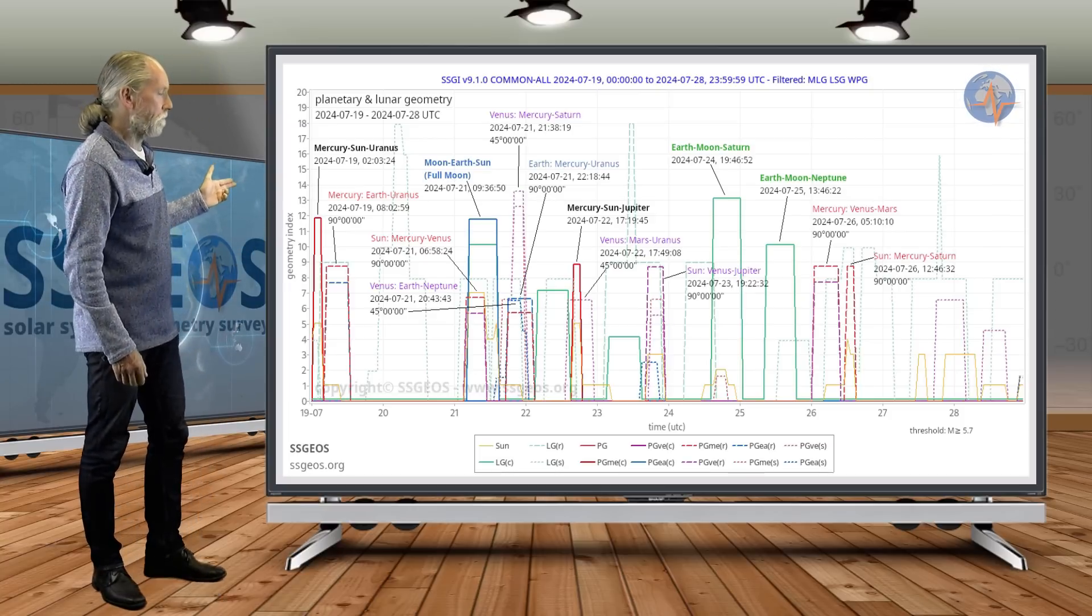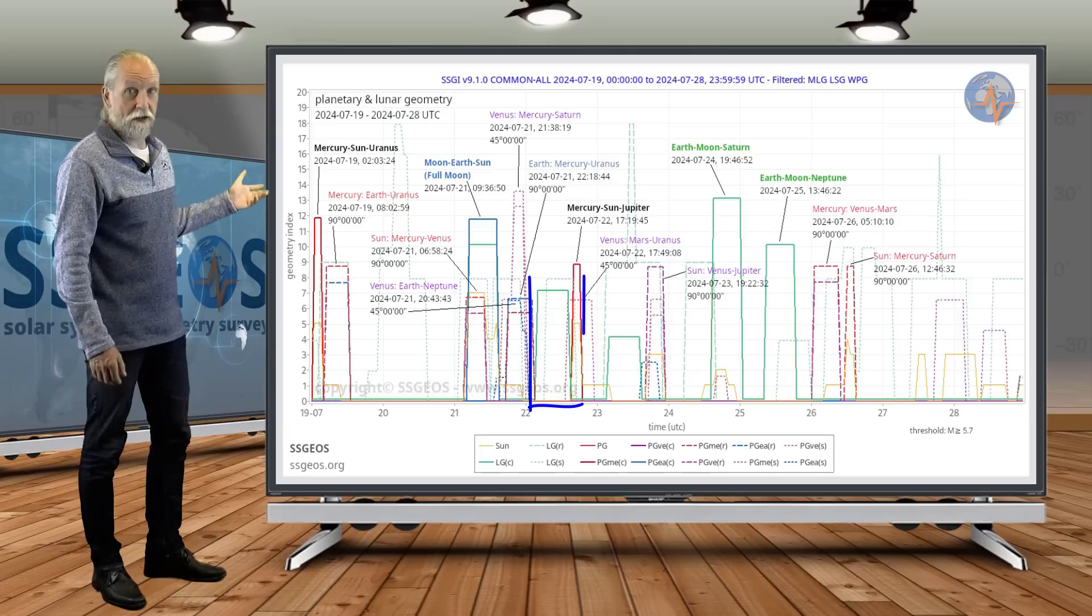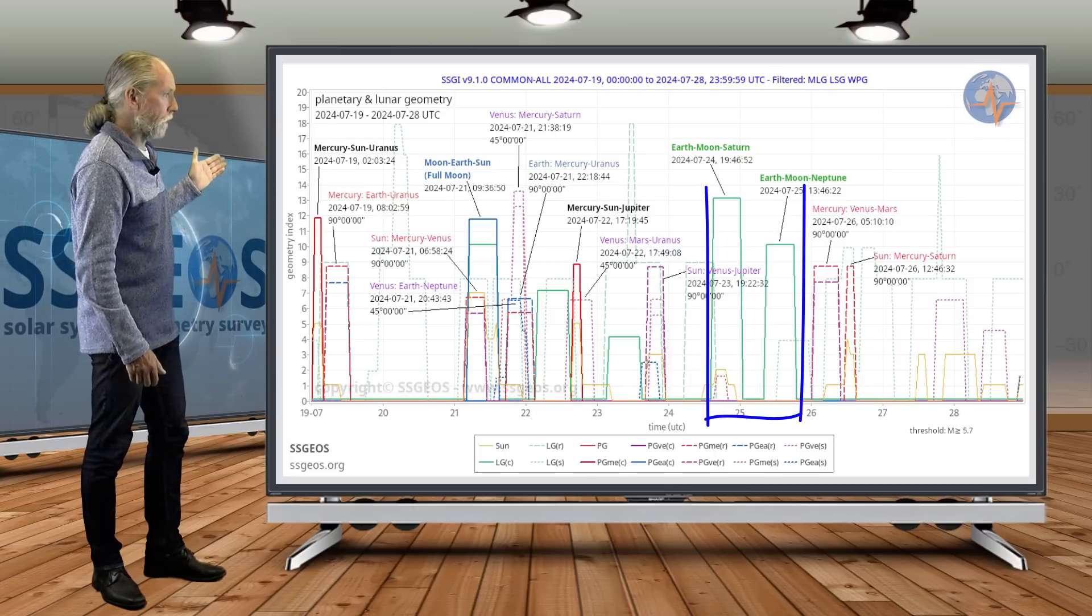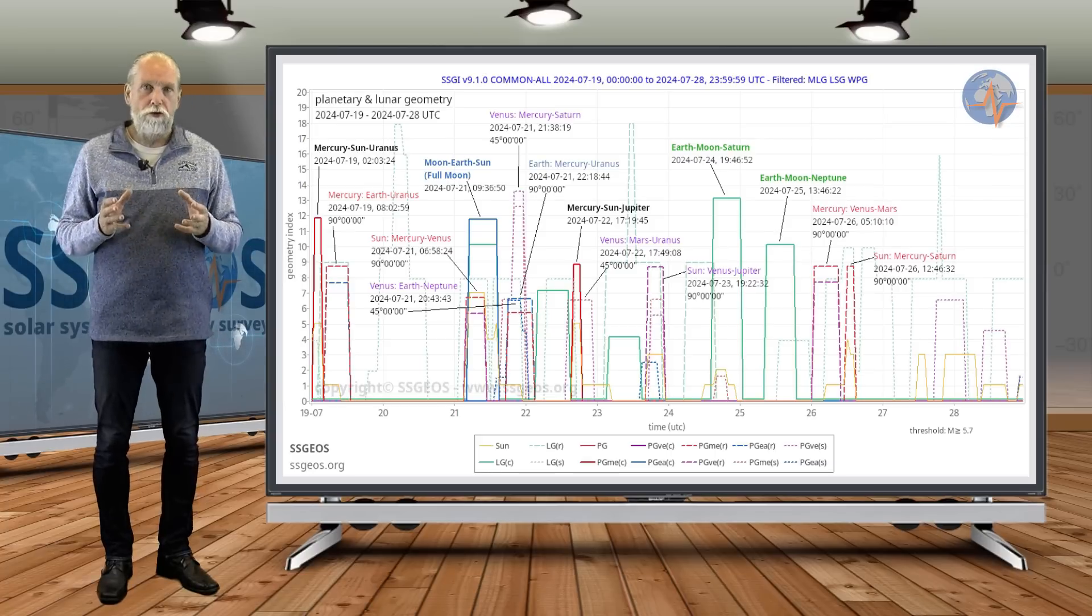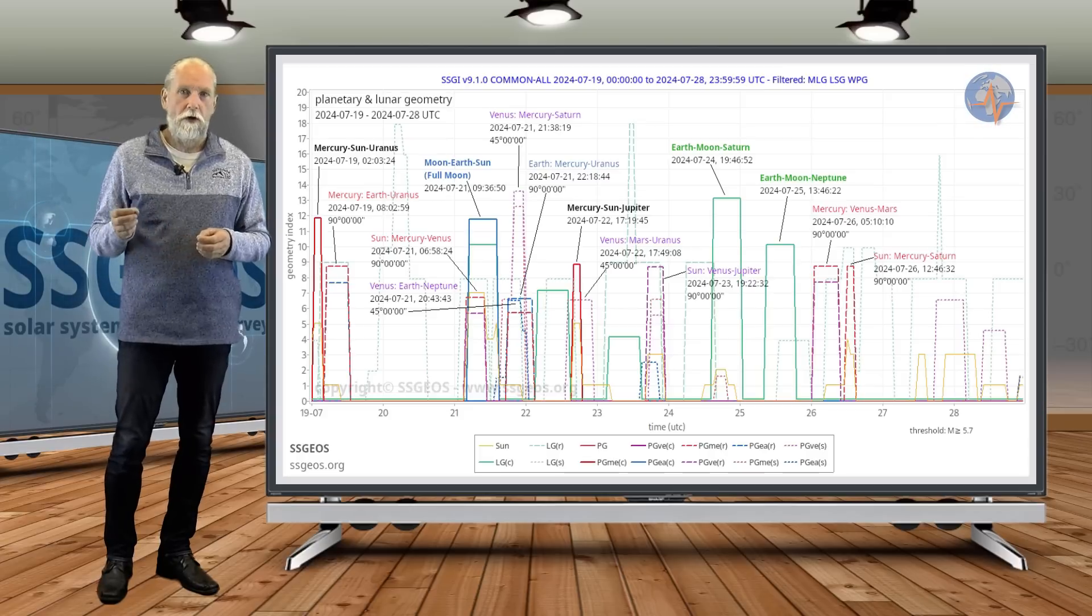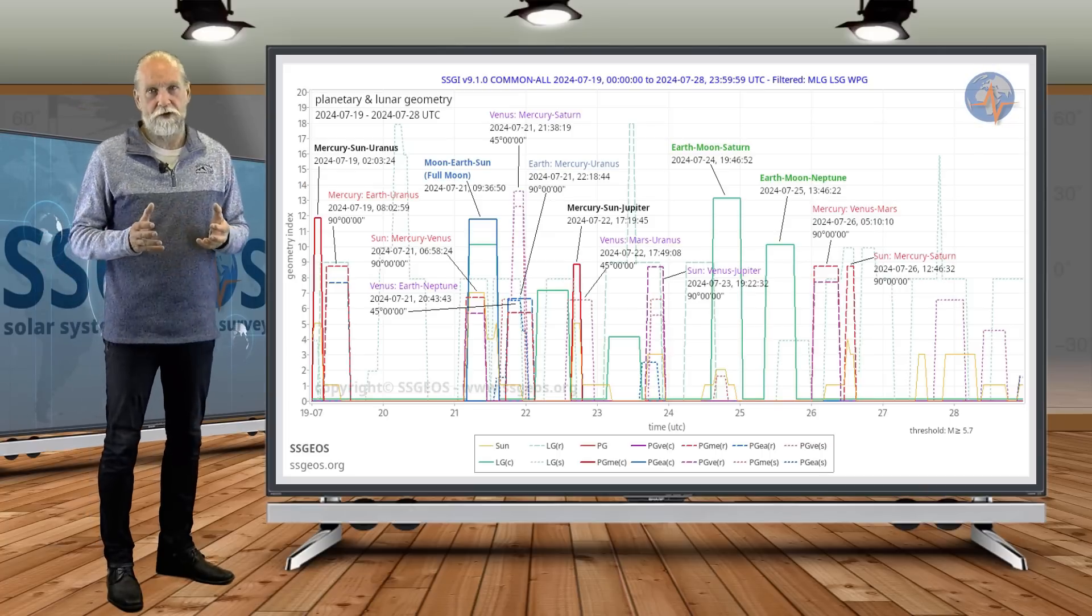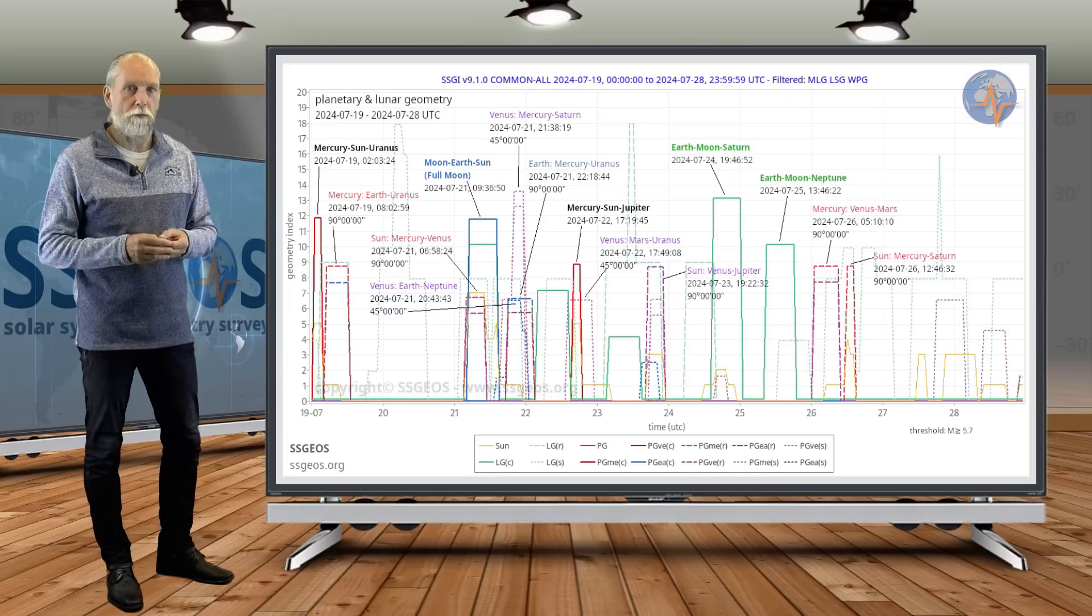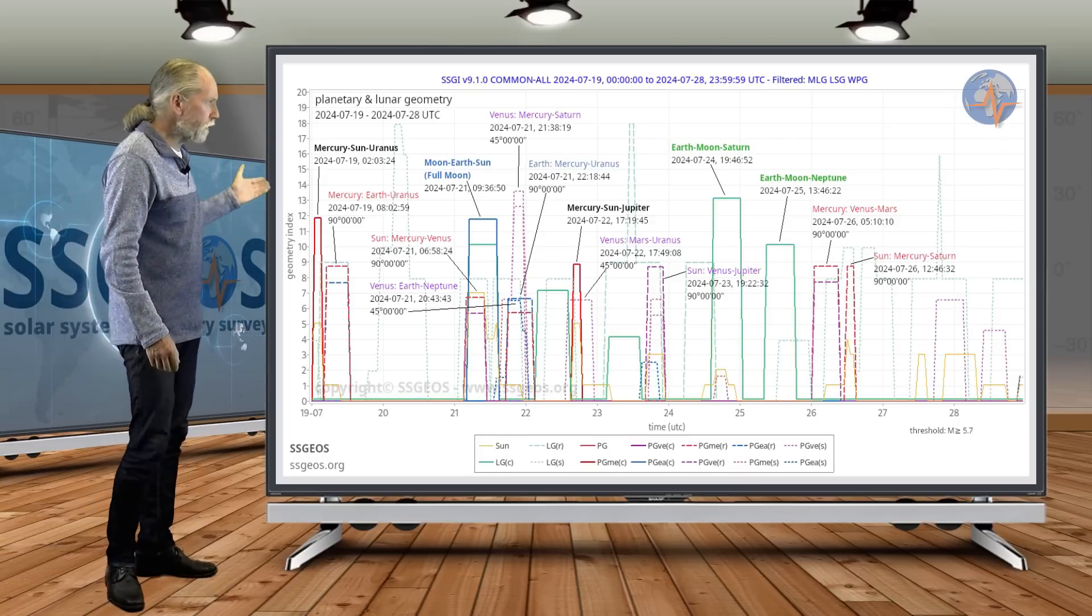Then we have also lunar conjunctions coming up. That is on the 22nd with Venus. It's not marked by the way. And also on the 24th and 25th, that's with Saturn and with Neptune. And remember, lunar conjunctions with outer planets, gas giants, that can be a marker for a larger seismic event. It doesn't happen all the time, but we have to be on higher alert when that happens. And of course, we will do additional updates on the website and in the social media when we think there is a higher probability of a major earthquake, like recently with the 7.4 in Chile.